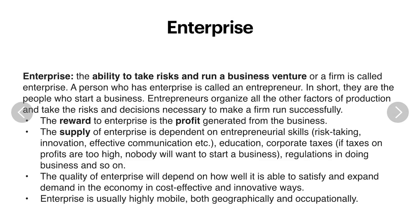The fourth factor is enterprise — the ability to take risks and run a business venture. A person who has enterprise is called an entrepreneur. Entrepreneurs organize all the other factors of production and take all the risk and decisions to make the firm run successfully. The reward for enterprise is profit, generated as the business succeeds. The supply of enterprise depends on the entrepreneur's skills — risk taking, effective communication, hard work, innovation, education — and also on corporate tax. If the taxes on profit are too high, that will demotivate people from starting a business, along with regulations in doing business.